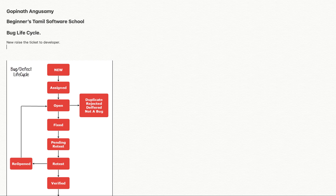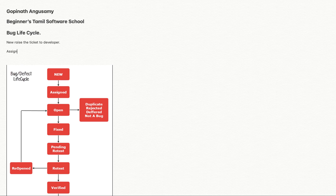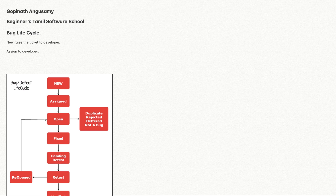The bug will be raised and sent to the development department. You can be assigned to another developer in the organization. Once you assign it to the developer, the developer will open it and see how many steps can be reproduced — the reproduced steps.